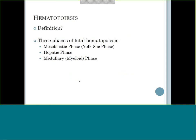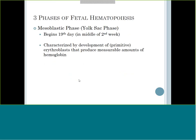There are three phases of fetal hematopoiesis. It will start with what we call the yolk sac phase, then move to the hepatic liver phase, and then finally go to the medullary bone marrow phase. Around the 19th day - about the second week - it will start making blood cells in the yolk sac phase, with very primitive, young red cells being made with just a little bit of hemoglobin.